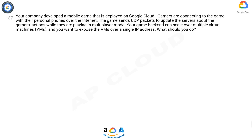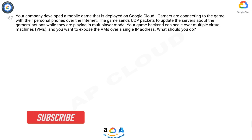Question 167. Your company developed a mobile game that is deployed on Google Cloud. Gamers are connecting to the game with their personal phones over the internet. The game sends UDP packets to update the servers about the gamers' actions while they are playing in multiplayer mode. Your game backend can scale over multiple virtual machines (VMs) and you want to expose the VMs over a single IP address. What should you do?